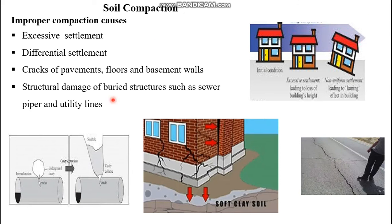Improper compaction causes the following issues. First, excessive and differential settlement — if a building rests on a loose soil mass, the surcharge load causes excessive even settlement. If the soil is not uniformly compacted, there will be a difference in elevation leading to differential settlement. Improper compaction also causes cracks in pavements, floors, and basement walls, and structural damage to drainage structures such as sewers, culverts, and pipes.